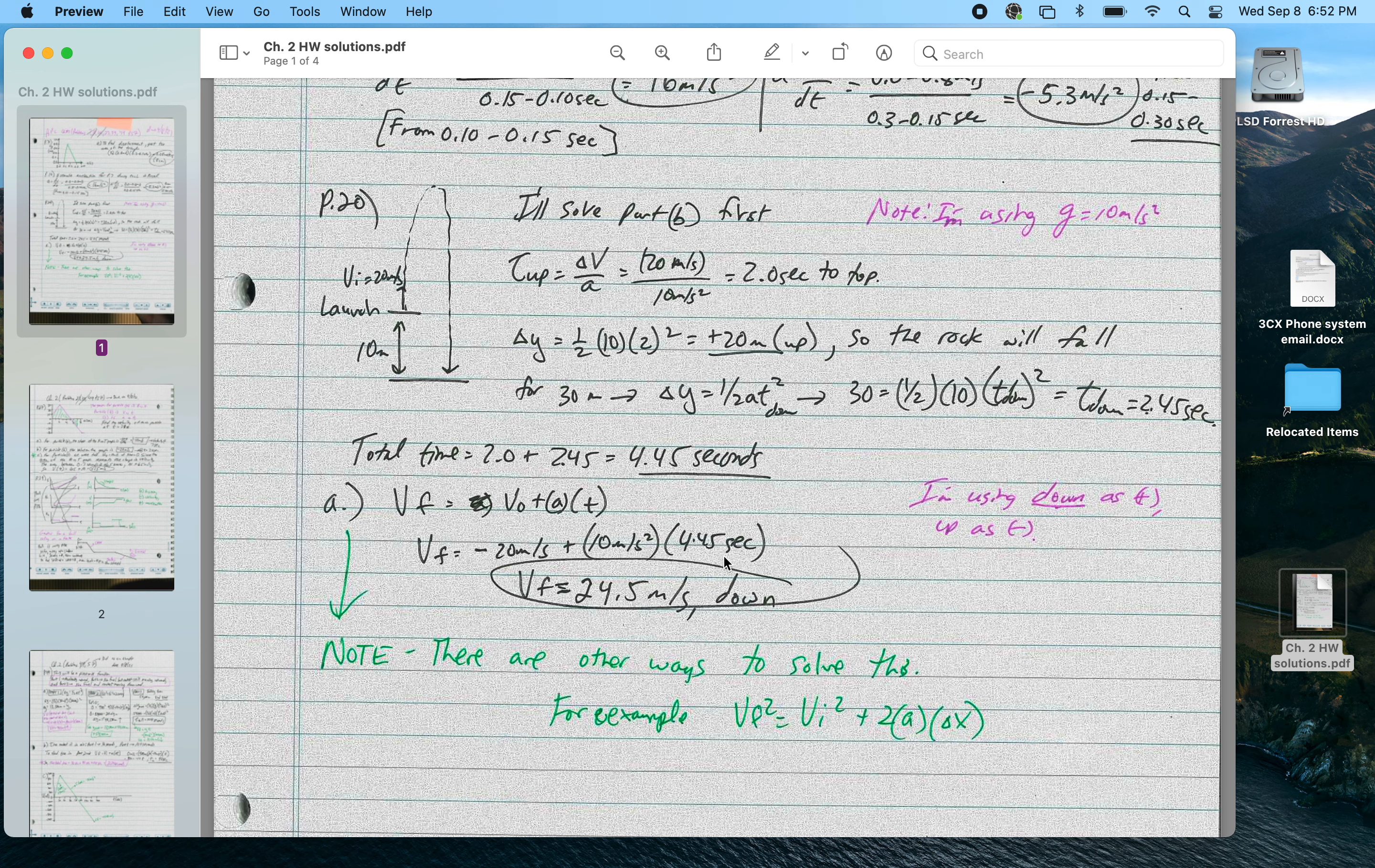So negative 20 meters per second up plus a times t, the total time is 4.45 seconds, so it gives me 24.5 meters per second downward. Now I could have also done vf equals v0 plus at for just this second part of the trip and used my v0 as 0 and the time down is 2.45 seconds, would have gotten me the same answer.